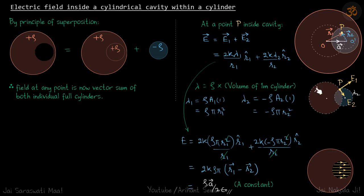A1 for this cylinder is pi r1 square and similarly lambda 2 for second cylinder is minus rho times A2 into 1. Minus rho into A2 is pi r2 square. This becomes minus rho pi r2 square.